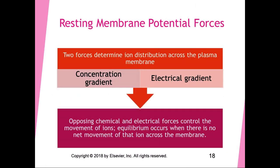There are forces at work that determine ion distribution across the plasma membrane: a concentration gradient, meaning there is more of one ion on the outside than the inside, and an electrical gradient. These opposing electrochemical forces control the movement of ions, and equilibrium occurs when there is no net movement of any ion across the membrane.